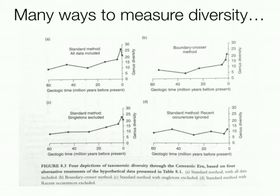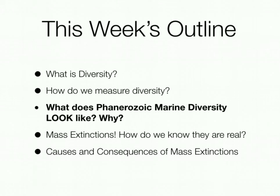There are many ways to measure diversity. Method A is the standard method with all data included; B shows just boundary crossing, which gives slightly lower total numbers; C is the standard method with singletons excluded; and D is the standard method with recent occurrences ignored — I'll explain why we might want to remove recent occurrences a bit later, and we'll discuss this more in lab. Now that we have some idea of how to measure diversity, we'll get into what Phanerozoic marine diversity actually looks like and why.